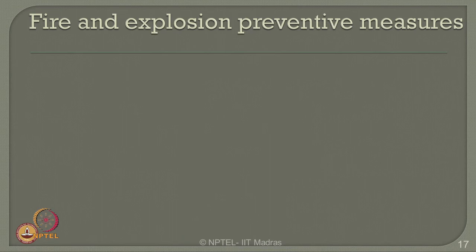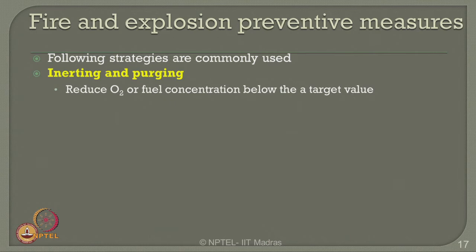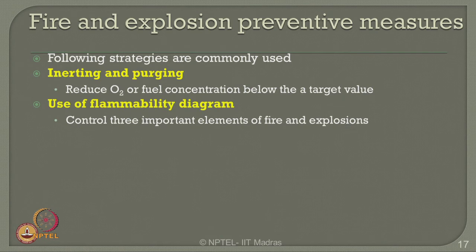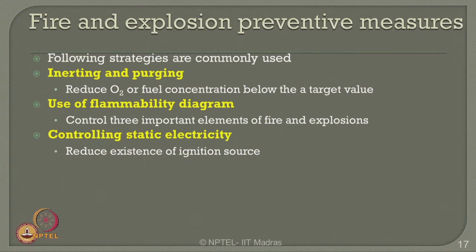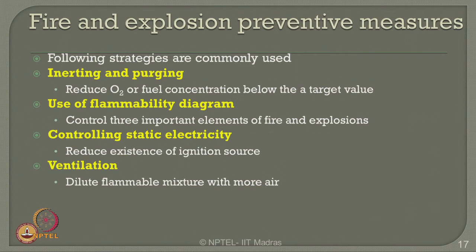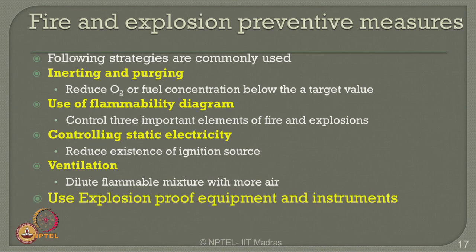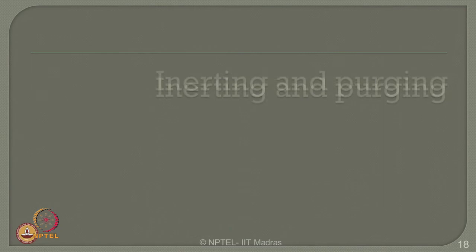Let us look at preventive measures commonly adopted in industry for preventing fire and explosions. The following strategies are commonly used: inerting and purging, which reduces oxygen content or fuel concentration below a specific target value; use of a flammability diagram to control the three elements of fire and explosion; controlling static electricity; reducing ignition sources; providing enough ventilation by diluting the flammable mixture with more air; using explosion-proof equipment; and using sprinkler systems.